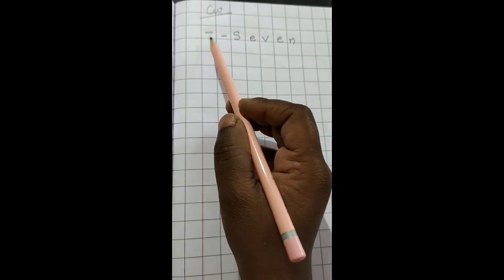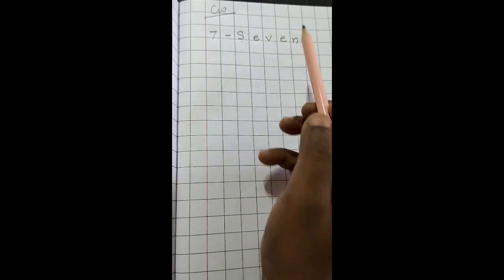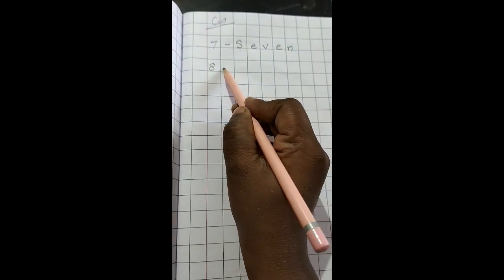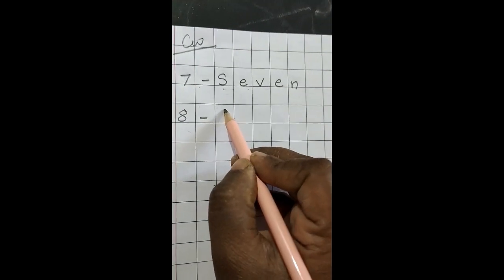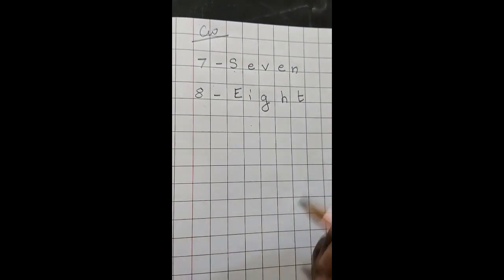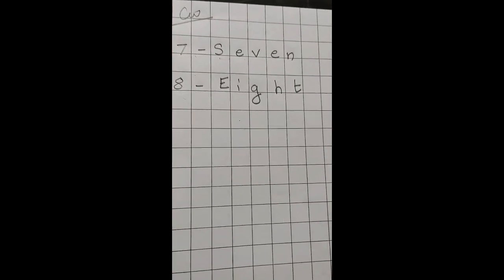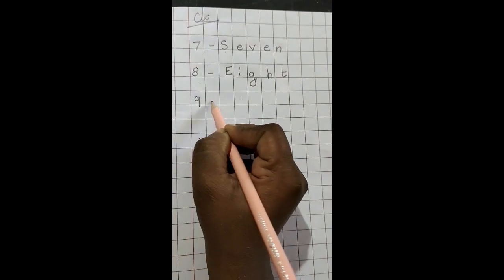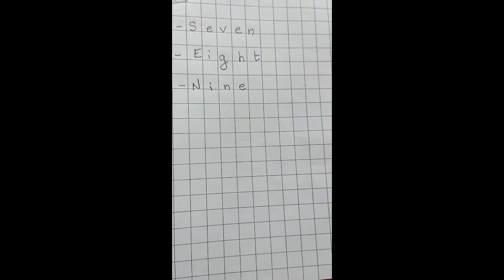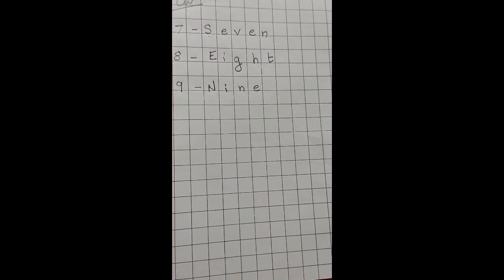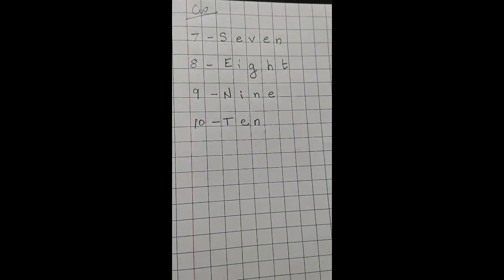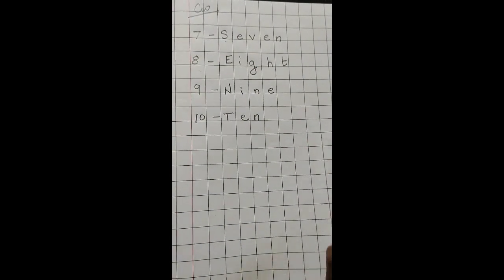In your maths copy, start writing the spelling of seven like this: seven dash S E V E N. After that, leave one gap and write eight dash E I G H T. Then write nine — N I N E: capital N, small I, small N, small E. And write ten — T E N. This is your classwork.